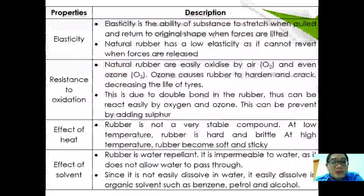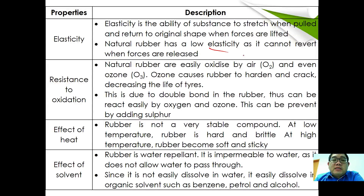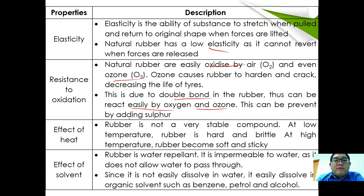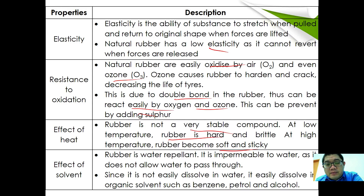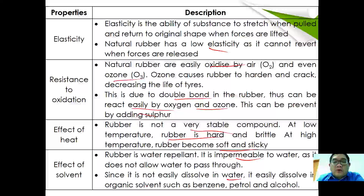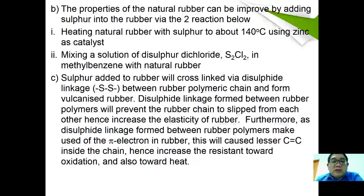Properties of natural rubber: it has low elasticity as it cannot fully revert when forces are released. Most natural rubber is easily oxidized by air and even ozone due to the double bonds in the rubber. Adding sulfur can prevent this. Rubber is unstable at extreme temperatures — hard and brittle at low temperatures, soft and sticky at high temperatures. Rubber is water-repellent and impermeable to water, but easily dissolved in organic solvents such as benzene, petrol, and alcohol.